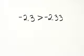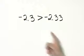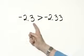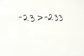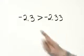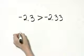Let's see if this statement is true or false. Negative 2 and 3 tenths greater than negative 2 and 33 hundredths. Now we can't simply compare decimal places like we do for positive numbers because I'm comparing two negative numbers.